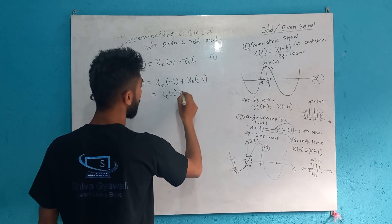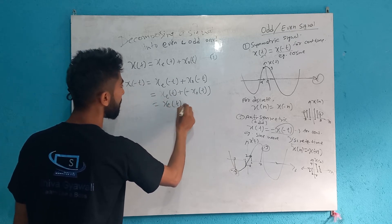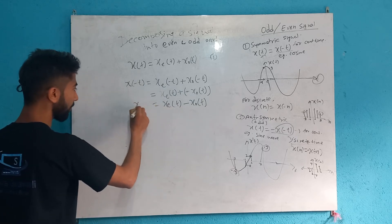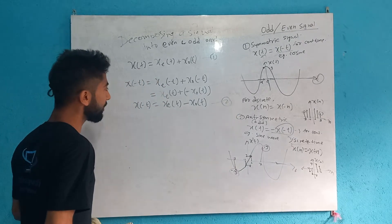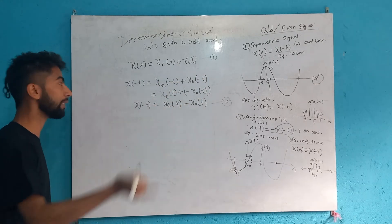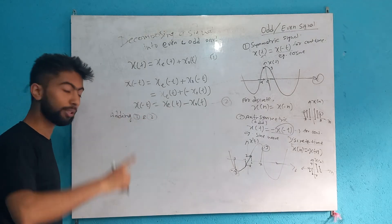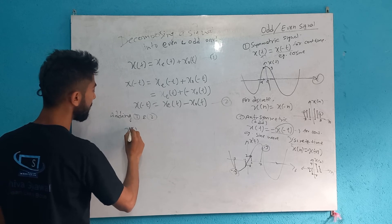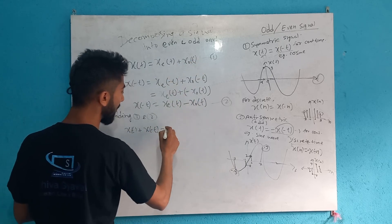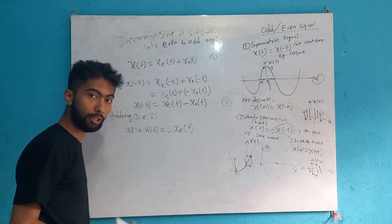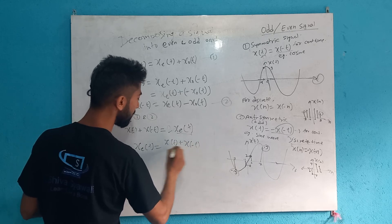We have 2 equations and 2 unknowns. Adding Equations 1 and 2: x(t) + x(-t) = 2·x_e(t), so the odd parts cancel. Therefore, the even part is: x_e(t) = [x(t) + x(-t)] / 2.